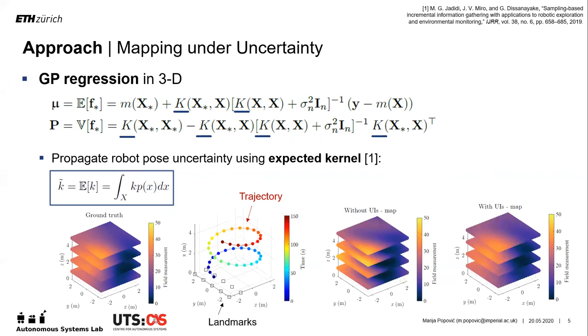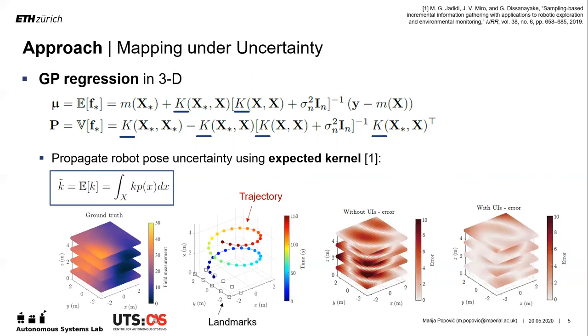These plots show the maps obtained without and with considering uncertain inputs, and here we see the corresponding error distributions, where darker shades show higher error. As expected, the method without uncertainty produces much higher error, motivating our approach.